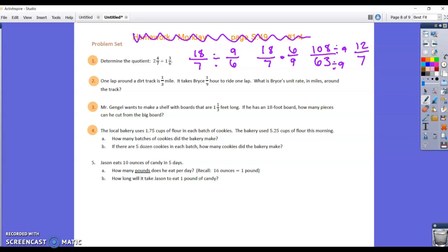One lap around a dirt track is one third of a mile. It takes Bryce an hour to ride one lap. What is his unit rate in miles around the track? So miles. Nine times one is nine. Three times one is three. Equals three. But three is what? Well, what was first? Miles. What did we make our denominator to be one? Is hours. So three is the number of miles. The second thing is for one hour. So per hour.